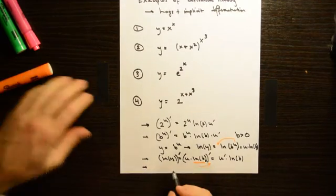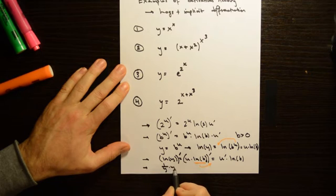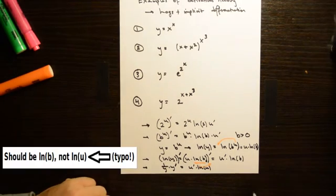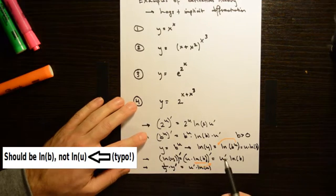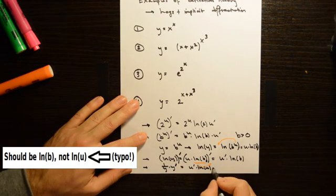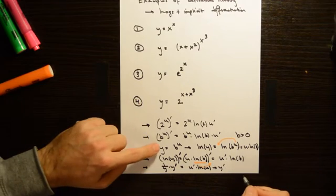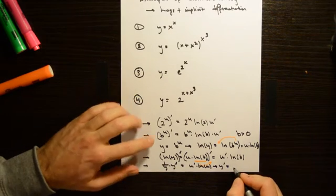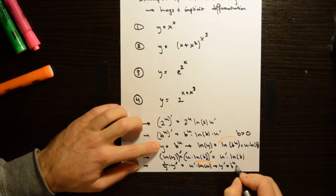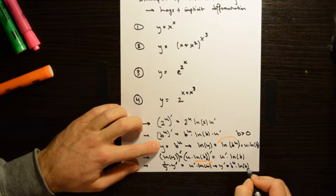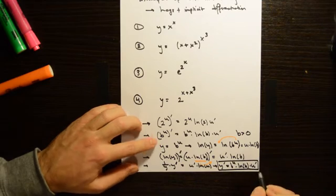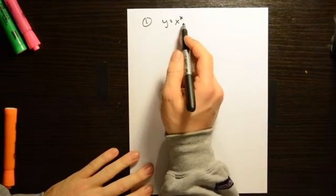The left side derivative gives 1 over y times y prime, equal to u prime times the natural log of b. So y prime equals y, which is b to the u, times the natural log of b times u prime. This rule has now been derived. A very important problem is y equals x to the x.